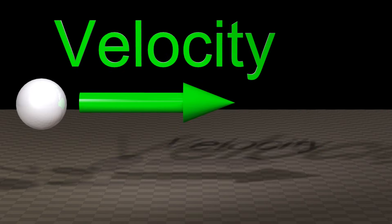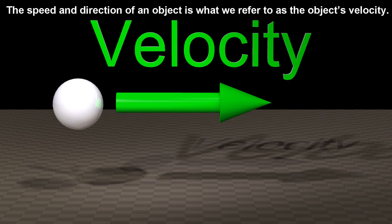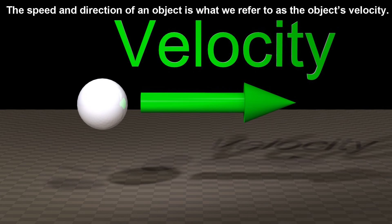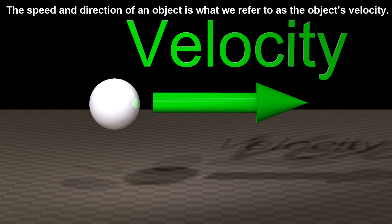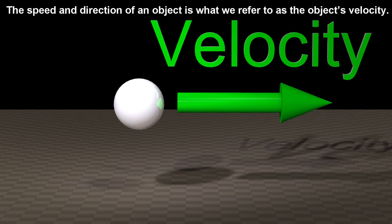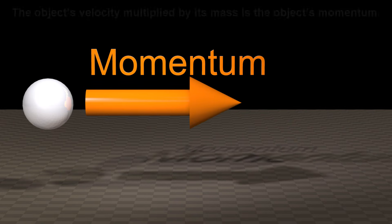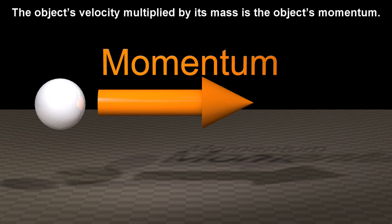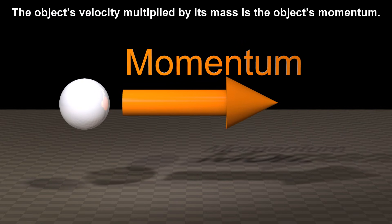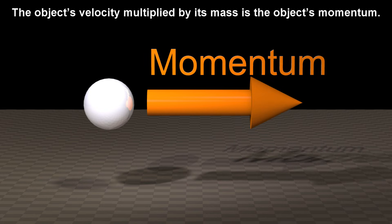The speed and direction of an object is what we refer to as the object's velocity. The object's velocity multiplied by its mass is the object's momentum.